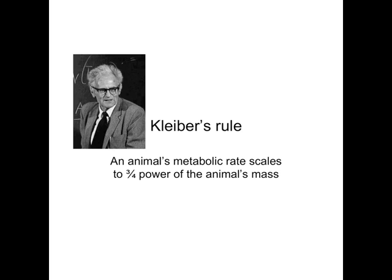The way I'm going to do this is use a rule that Max Kleiber came up with in the 1930s. His rule basically said that an animal's metabolic rate — how quickly it uses energy — scales to a three-quarters power of the animal's mass. He came up with that rule by calculating the metabolic rate for loads of animals and their mass and plotting it on a graph.